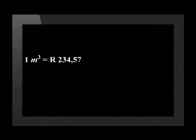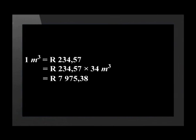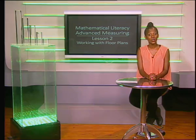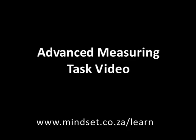We now need to calculate the cost of the concrete. If 1 metre cubed of concrete costs R234,57, then 34 metres cubed will cost R7,975,38. Thank you for joining us, Grade 12s. You have worked hard. Don't forget to do the questions found in the advanced measuring task video.